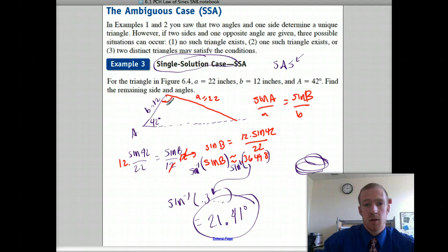Alright, so we have that angle. This is B, 21.41 degrees. And then we would subtract these two from 180. So 180 minus 63.41 is 116.59.